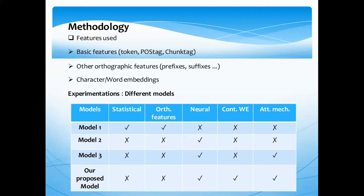Our main features are basic features, which are token, POS tag, and chain tags, as well as other orthographic features such as prefix, suffix, and character embeddings, and contextualized word embeddings provided by the Hipe team. We considered three models as baselines.